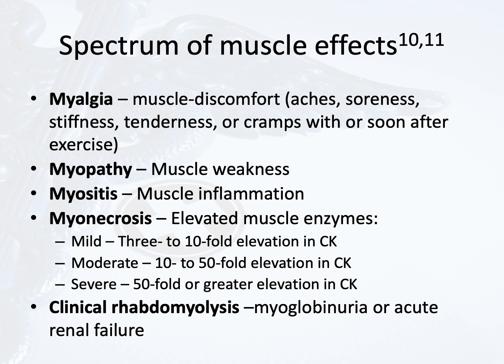The spectrum of effects of statins on skeletal muscle includes myalgia, myopathy, myositis, myonecrosis, and clinical rhabdomyolysis. The initial phase may be myalgia — muscle discomfort including aches, soreness, stiffness, tenderness, or cramps — especially when they occur with or soon after exercise; creatine kinase may be normal in this case. With myopathy, actual muscle weakness occurs. With myositis, there is actual inflammation. With myonecrosis, severity is assessed as mild, moderate, or severe depending on the elevation of creatine kinase in the blood. The most severe form is clinical rhabdomyolysis, where muscle breakdown causes acute renal failure.